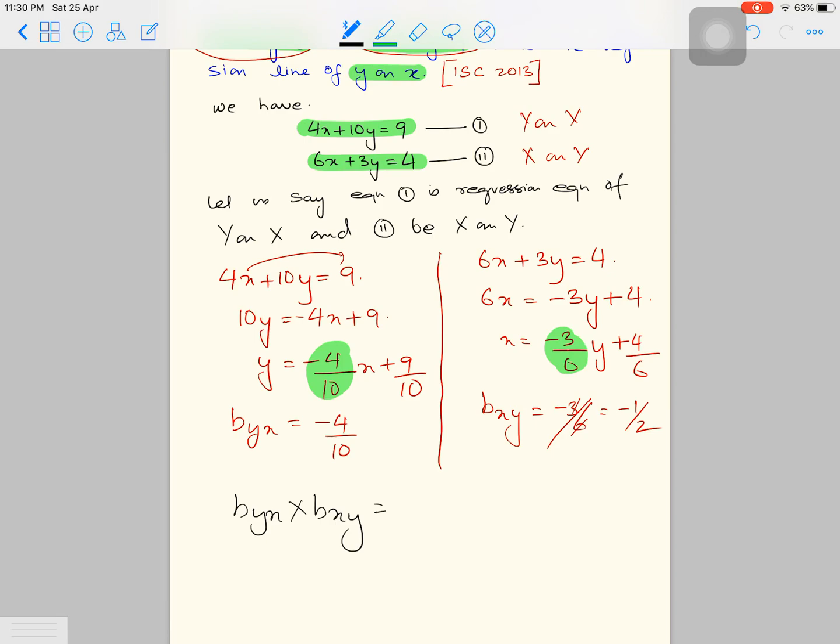That would give me minus 4 by 10 multiplied by minus half, and that would be 1 by 5, which is less than or equal to 1.